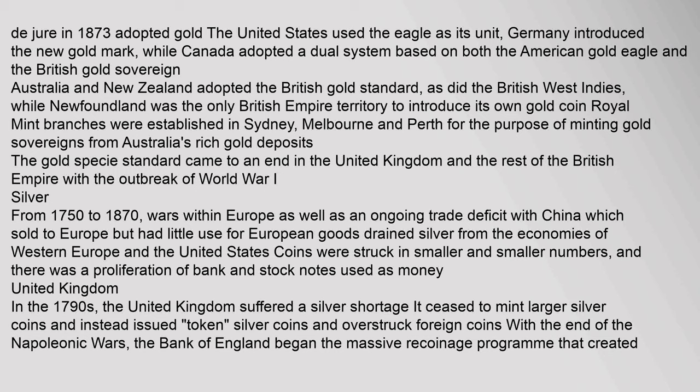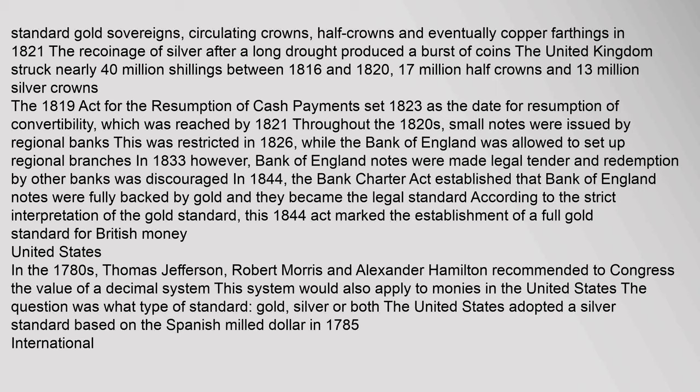From 1750 to 1870, wars within Europe and an ongoing trade deficit with China drained silver from the economies of Western Europe and the United States. Coins were struck in smaller and smaller numbers, and there was a proliferation of bank and stock notes used as money. In the 1790s, the United Kingdom suffered a silver shortage, ceased to mint larger silver coins, and instead issued silver token coins. With the end of the Napoleonic Wars, the Bank of England began a massive recoinage program that created standard gold sovereigns, circulating crowns, half-crowns, and eventually copper farthings.